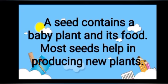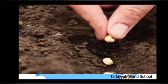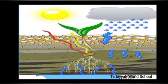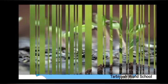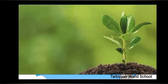A seed contains a baby plant and its food. Most seeds help in producing new plants. When a seed is sown in the soil and given sufficient water, air and sunlight, it grows into a new plant.